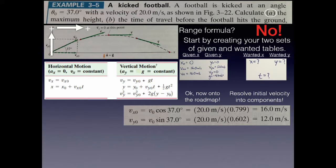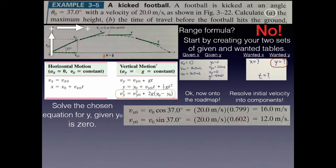Now let's get our roadmap for finding the maximum height y-final. We don't have time, so we need a vertical equation that doesn't contain time — that's the equation vy² = vy-naught² + 2g(y − y-naught). Checking: we have vy, vy-naught, g, and y-naught, so y is the only unknown. Since y-naught is set to zero, we solve directly for y.